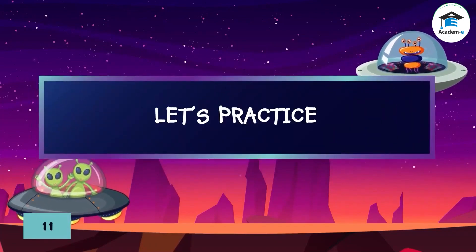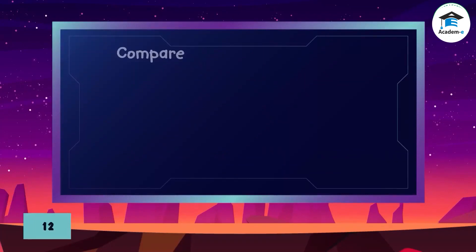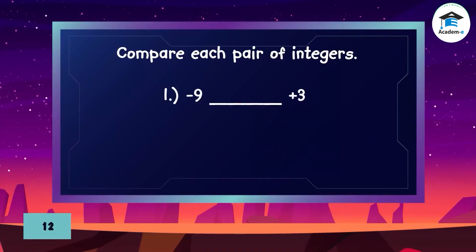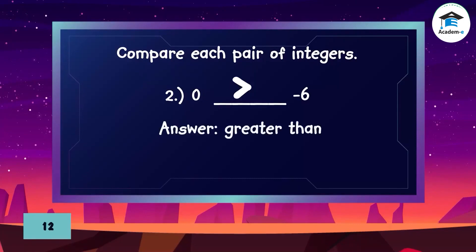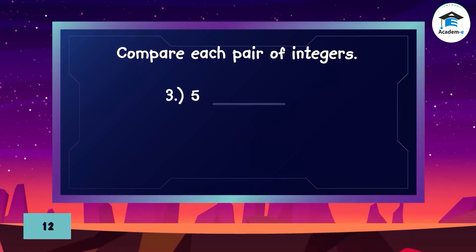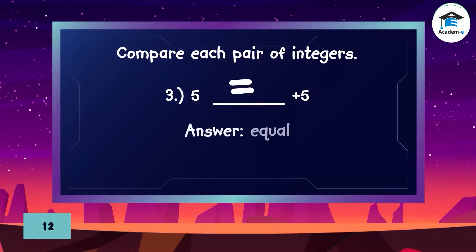Let's practice. Compare each pair of integers. (1) Negative 9 vs. positive 3 — answer: less than. (2) 0 vs. negative 6 — answer: greater than. (3) Positive 5 vs. positive 5 — answer: equal.